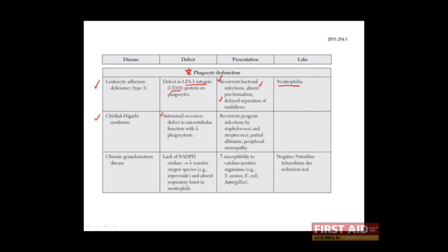This results in inefficient clearance of phagocytosed bacteria, and clinically is characterized by recurrent pyogenic infections with staphylococci and streptococci.